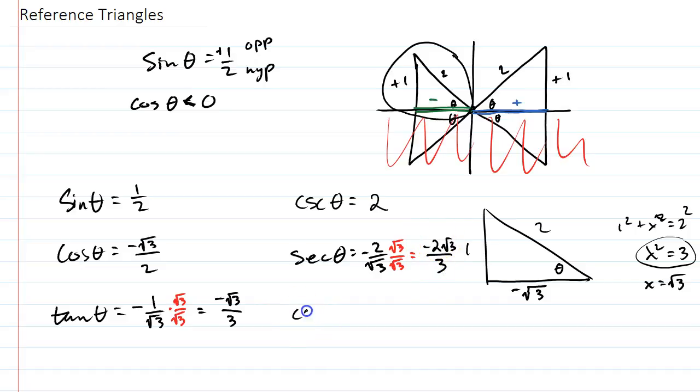Okay, and then lastly here, cotangent of theta is going to be this flipped over, which really if we just went to the original answer and flipped it over, it would be negative root 3. Okay, so we have our 6 trig functions.